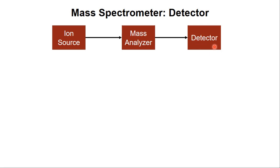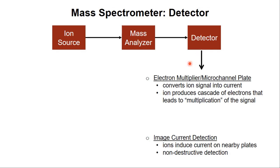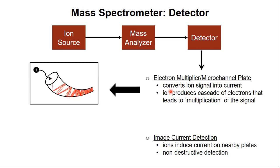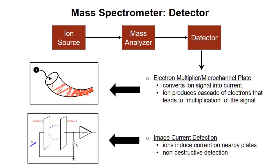Detectors, moving off to the far right of our block diagram, are what let us know which mass-to-charge ratios have been separated by the mass analyzer. They're also going to give us a rough indication of how many of those different mass-to-charge ratios, or how much of a given mass-to-charge ratio, is present. Detectors all work by converting the ions into some kind of electrical signal that can be processed by a computer. There are two general types: electron multiplier or microchannel plates, and image current detection. In an electron multiplier, ions impinge on a surface causing a cascade of electrons that leads to amplification of that signal. In image current detection, ions pass by a metal plate and induce a current on these nearby plates as they go by. We'll talk about image current detection later in the context of two different types of mass analyzers.